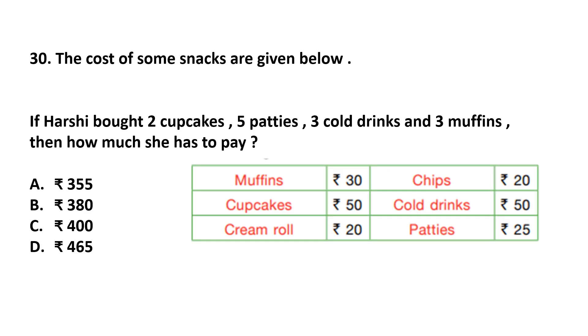Question number 30. The cost of some snacks are given below. If Hershey bought 2 cupcakes, 5 patties, 3 cold drinks, and 3 muffins, then how much she has to pay? He bought 2 cupcakes. The cost of 1 cupcake is Rs. 50. So 2 cupcakes are Rs. 100. 50 plus 50 is 100. 5 patties. 1 patty is Rs. 25. So 5 patties is 25 multiplied by 5 equals 125.